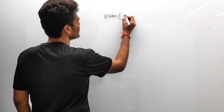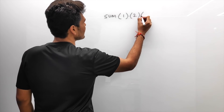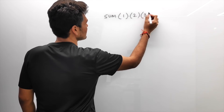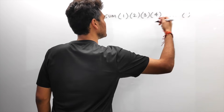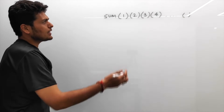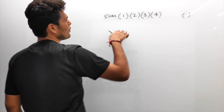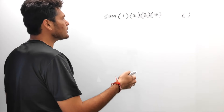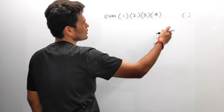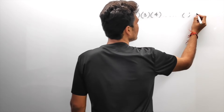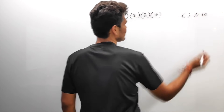Suppose we have a function where we can pass in arguments like this, and it can be any number. What this should do is give me a sum of all these numbers, so it should probably give me the output as 10.